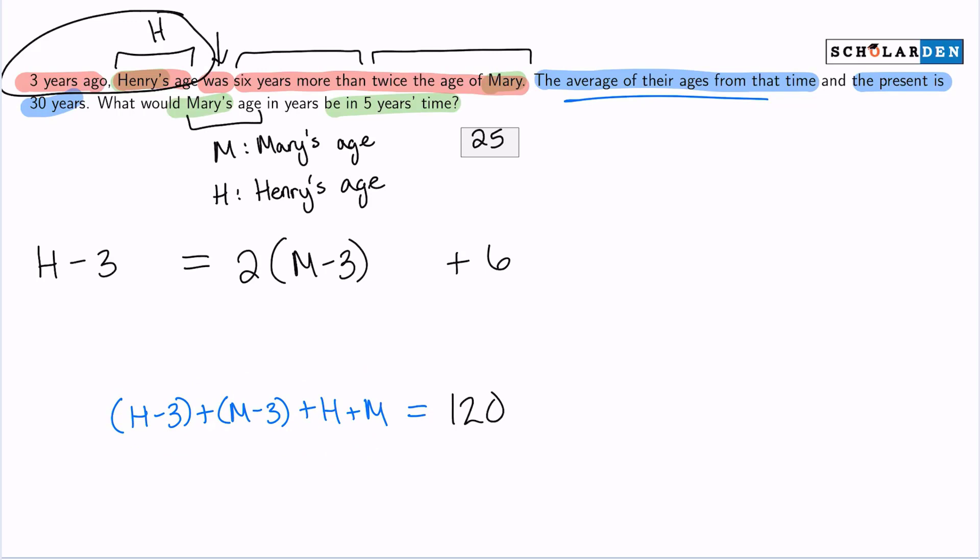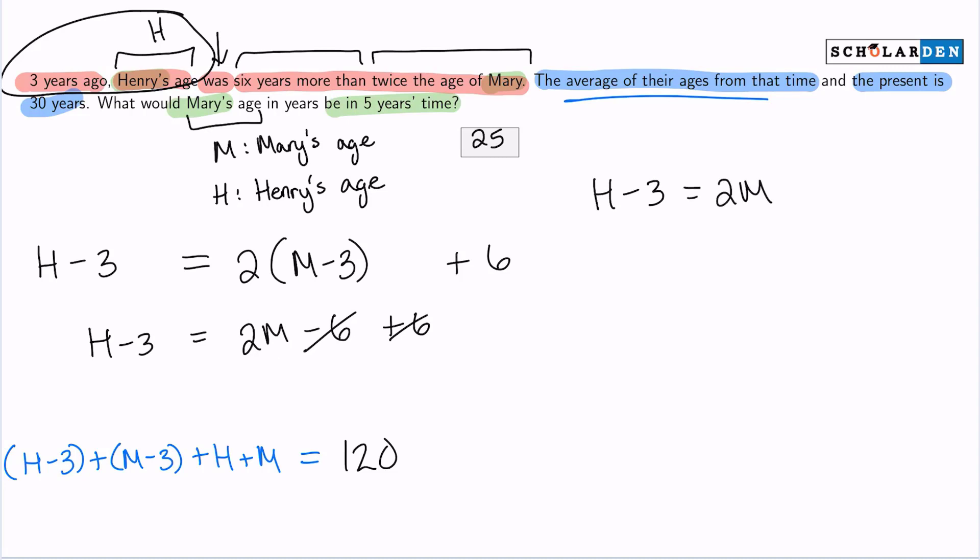So far, so good. Let's just distribute and simplify here because there's a lot of parentheses. Let me deal with this top equation. Two times M is two M minus six plus six. So I see here that our sixes will eliminate, giving me H minus three equals two M.